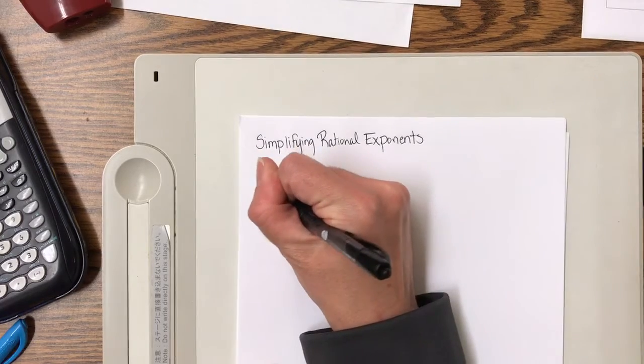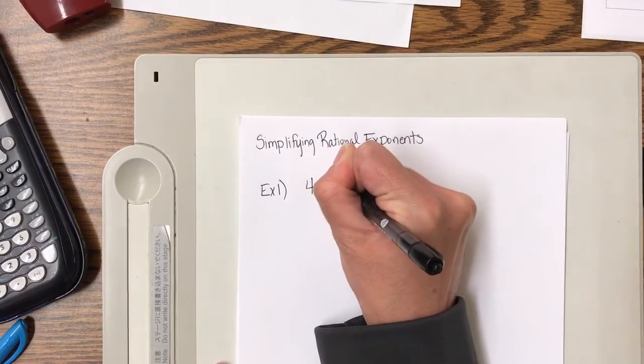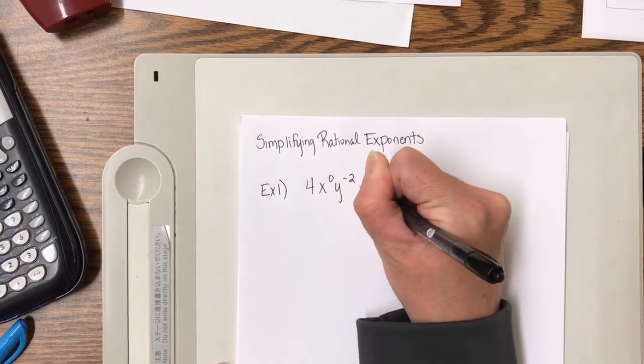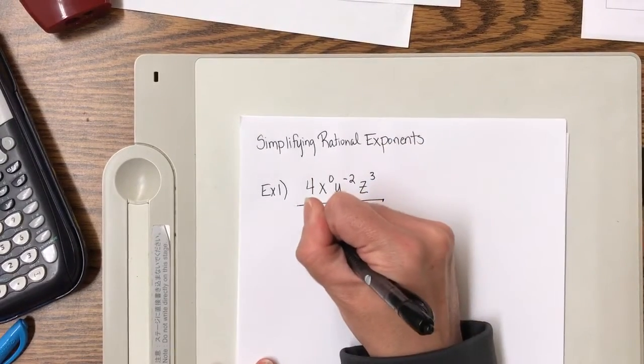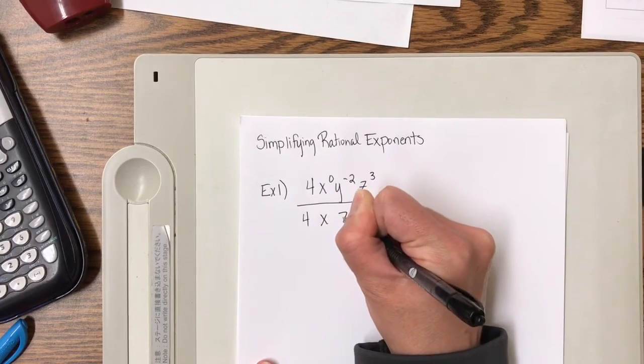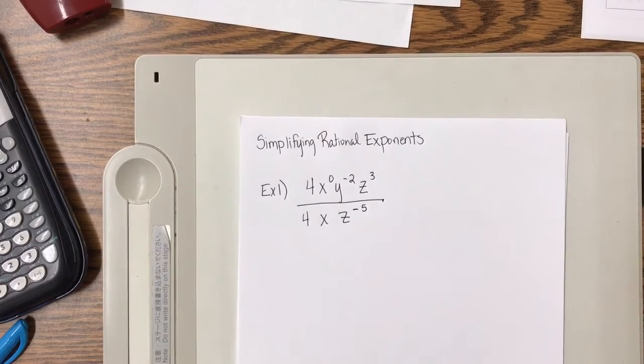So our first example, we have 4x to the 0, y to the negative 2, z to the third over 4x, z to the negative 5. Now there's several ways you can attack this problem and there's no rule that says you have to apply this property first. It's not exactly like the order of operations. However, I can go that route and apply those steps the same way.